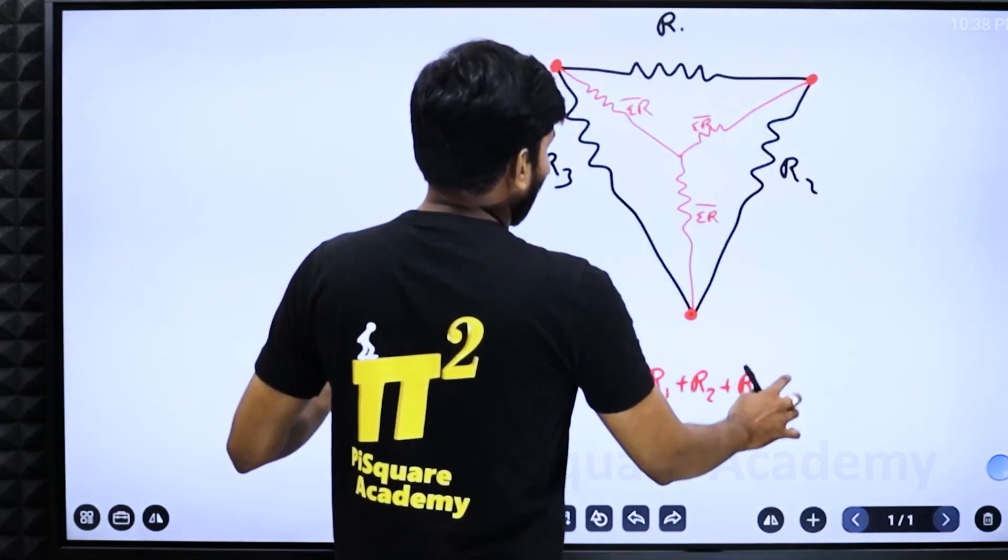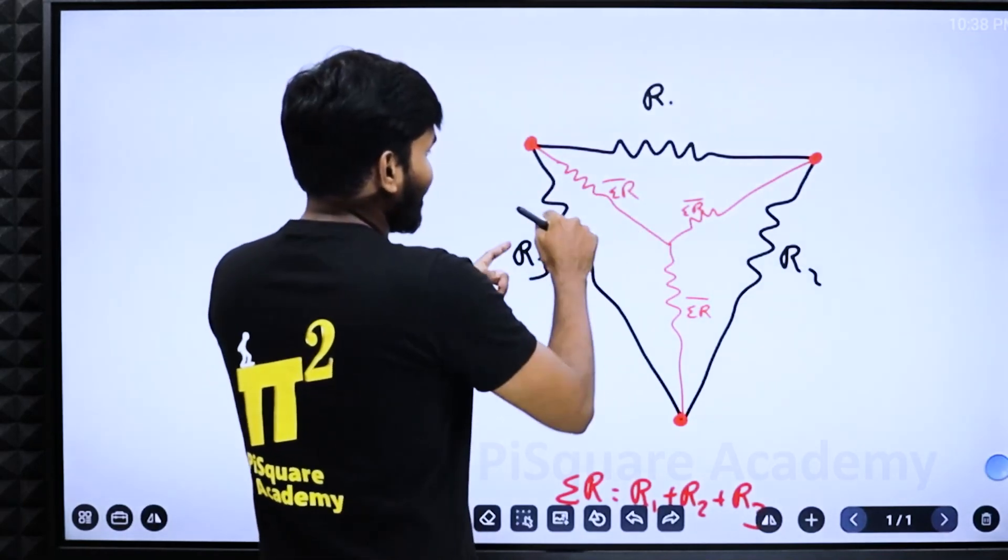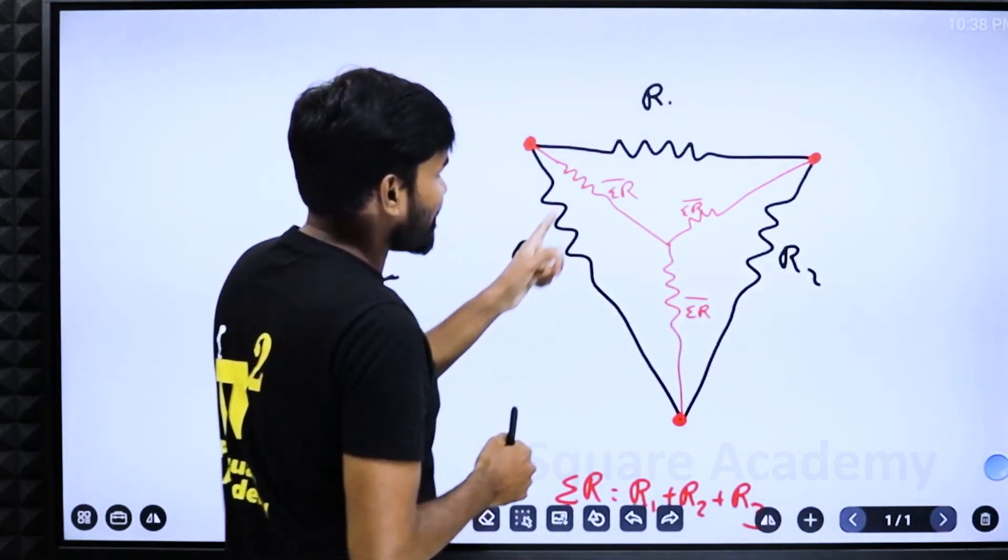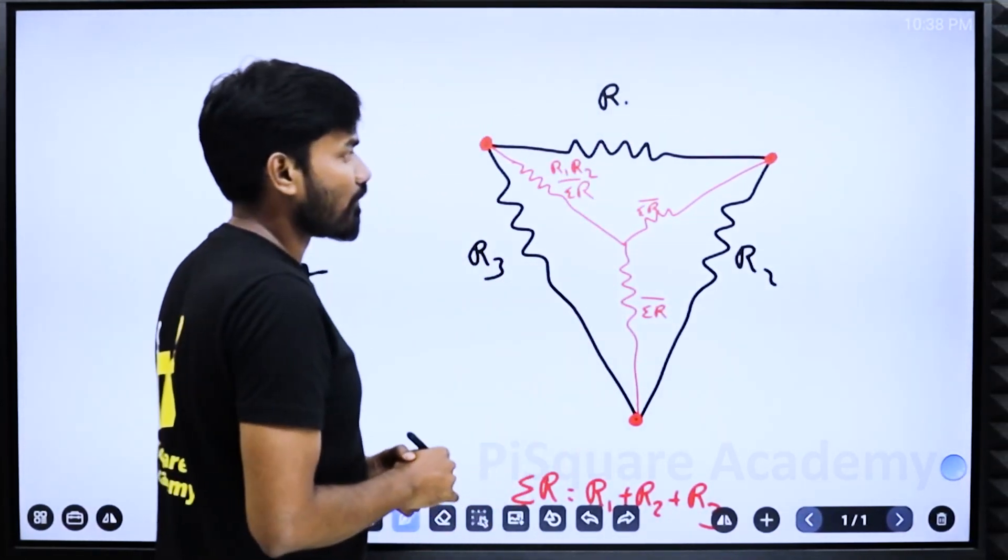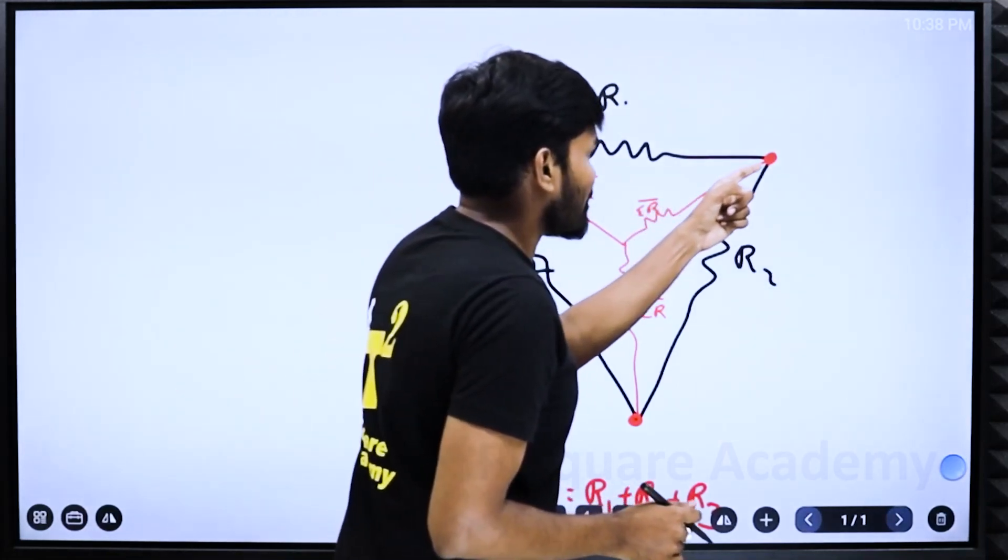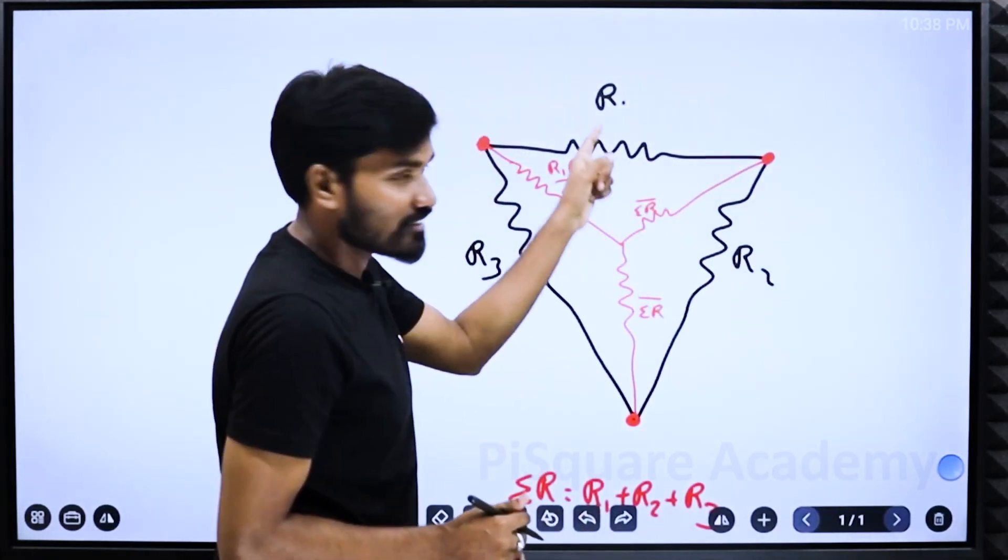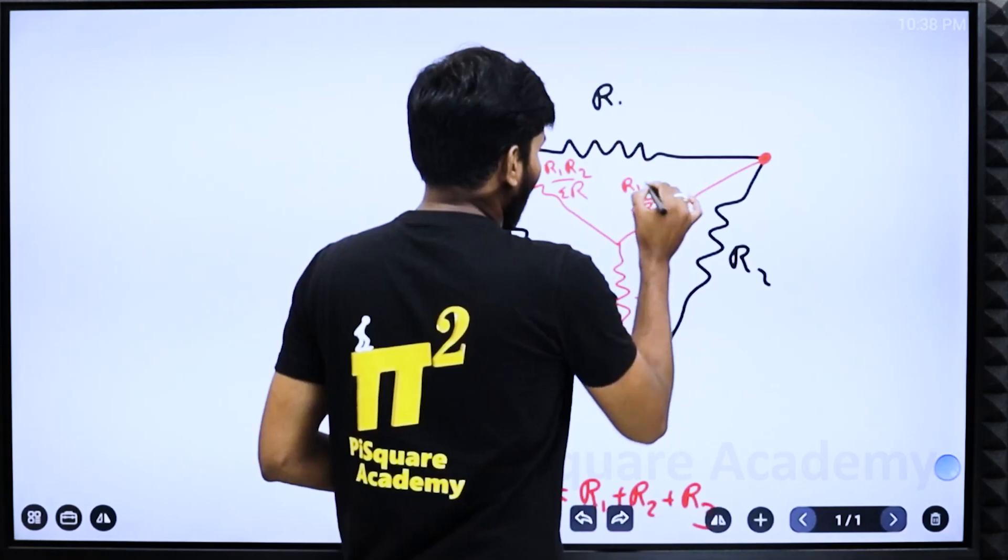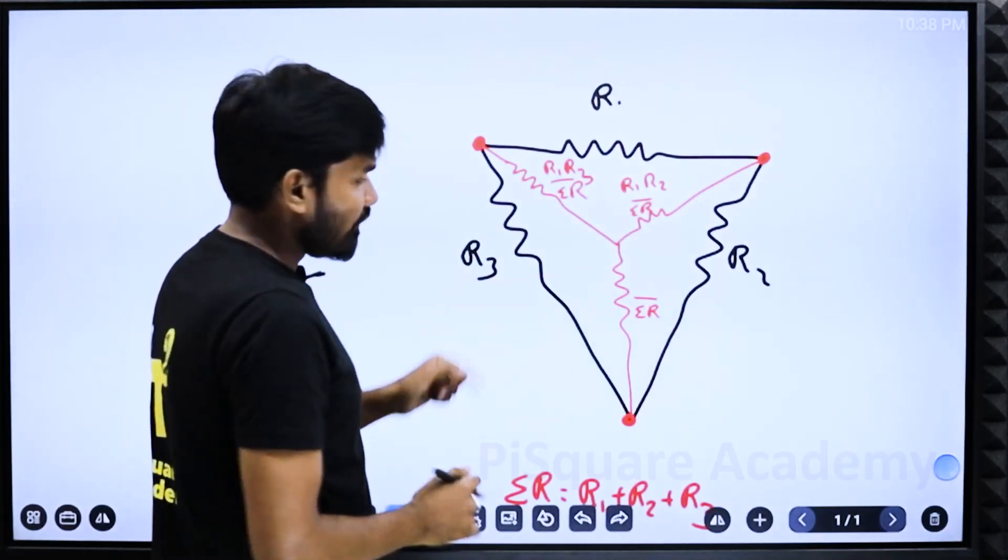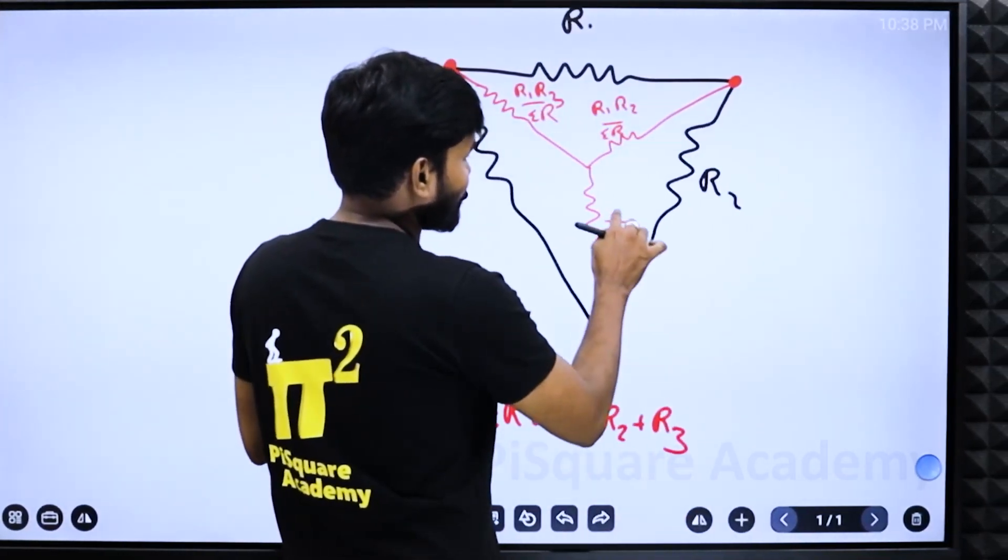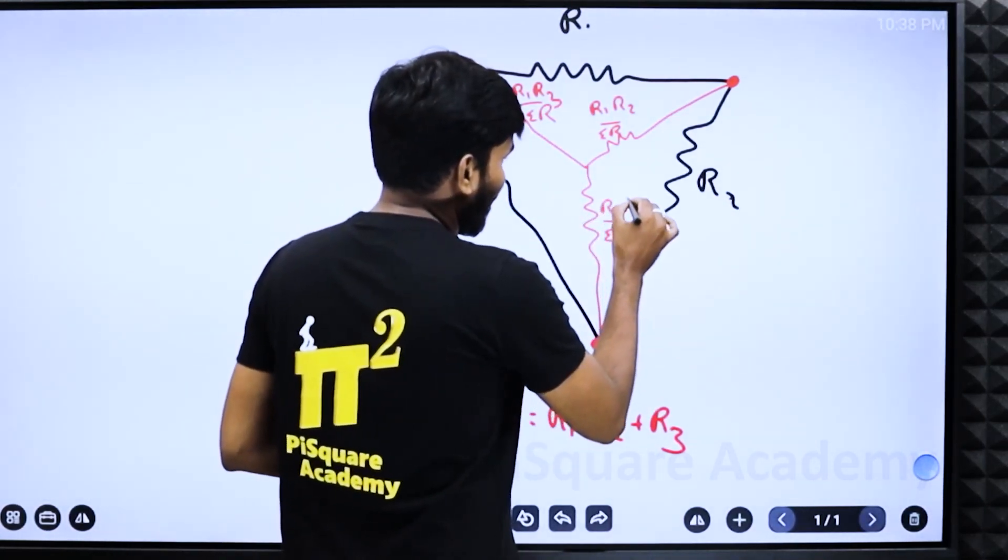Coming to the numerator. This element is in touch with these two elements, these two black resistances. Take the product of that, R1 R2. This resistance is in touch with these two resistances. Take that product, R1 R3. This resistance is in touch with these two resistances, so product of these two, R2 R3.